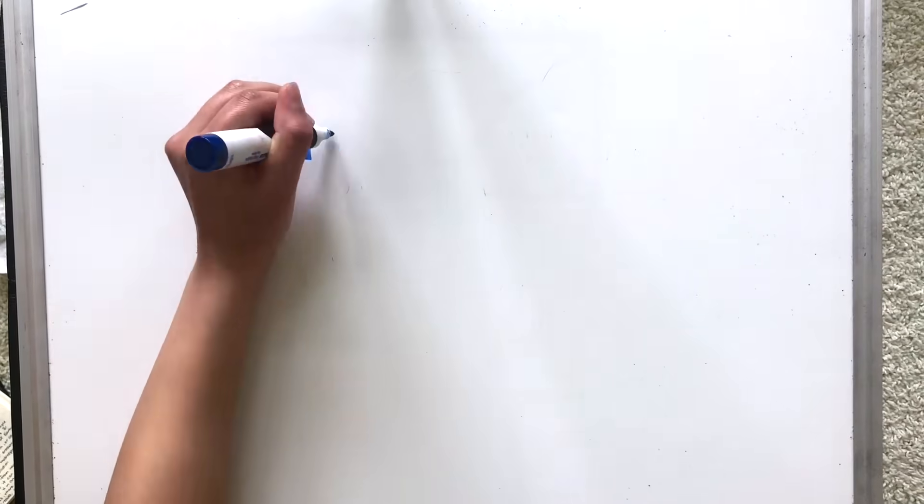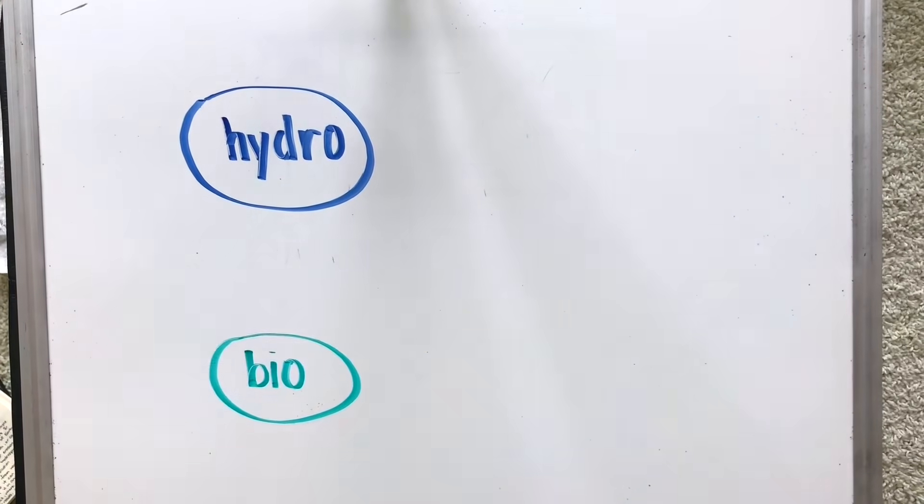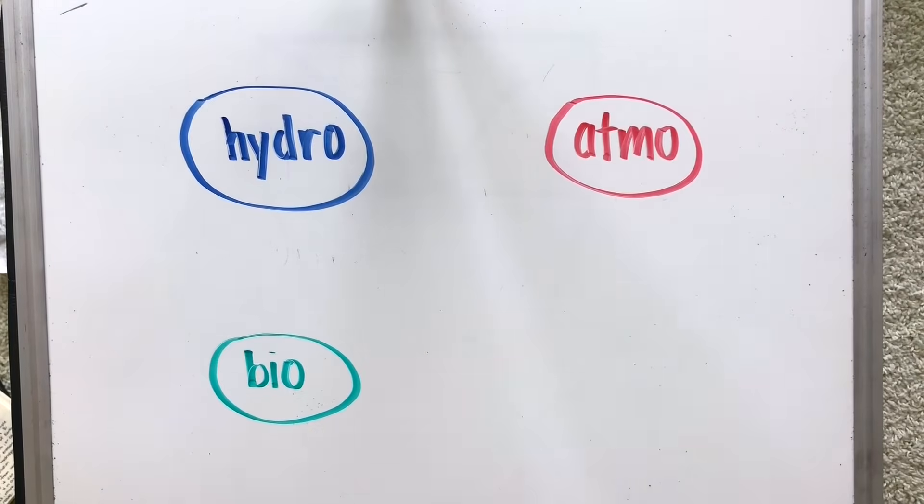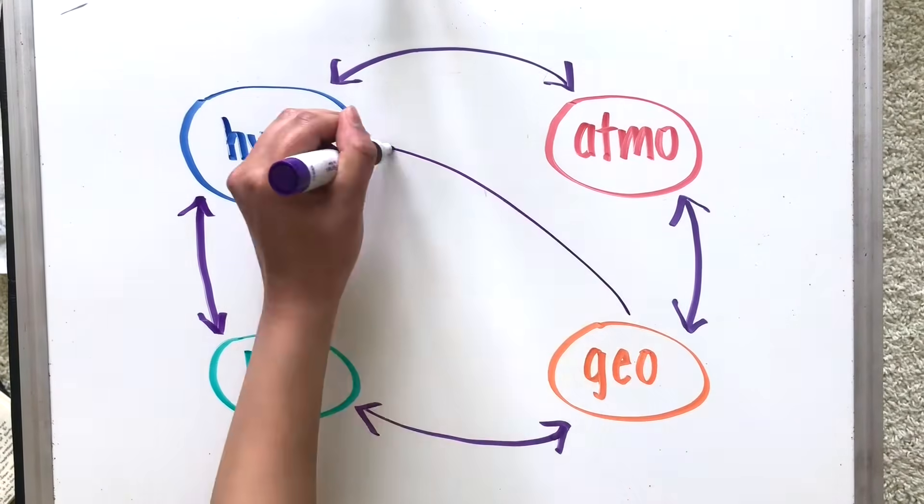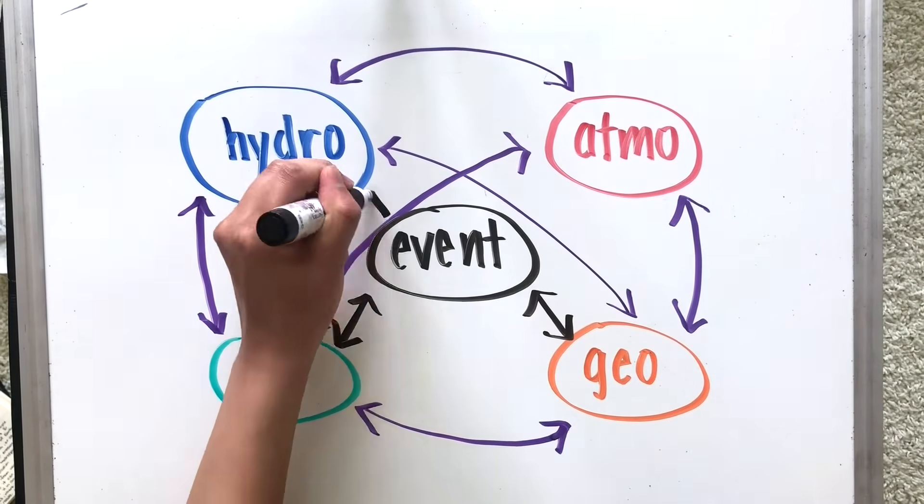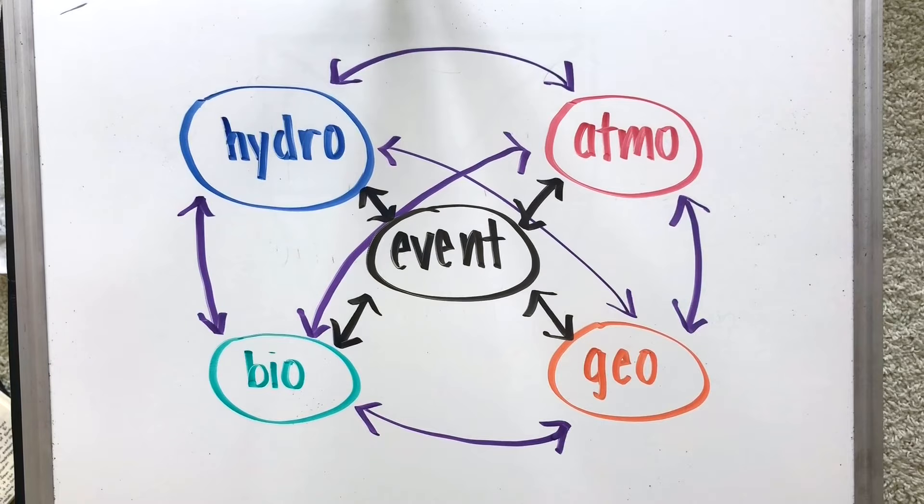All interactions between systems can be represented by this diagram. There are interactions between the systems like we just discussed, but also certain events can occur as a result of a change in a system, or can cause a change in the systems themselves, hence the double arrow.